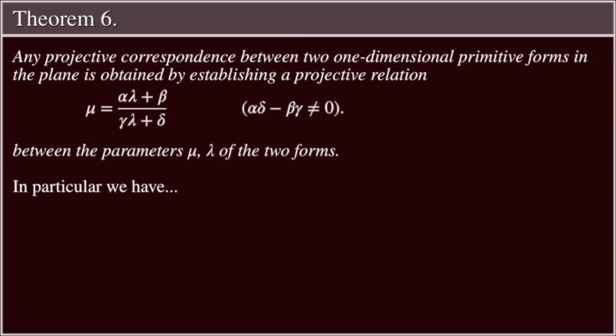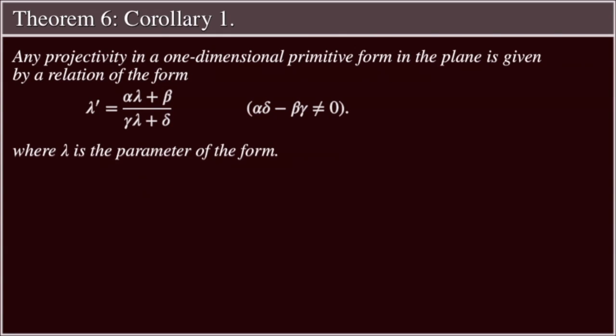In particular, Corollary 1: Any projectivity in a one-dimensional primitive form in the plane is given by a relation of the form λ′ = (αλ + β) / (γλ + δ), with αδ − βγ ≠ 0, where λ is the parameter of the form.